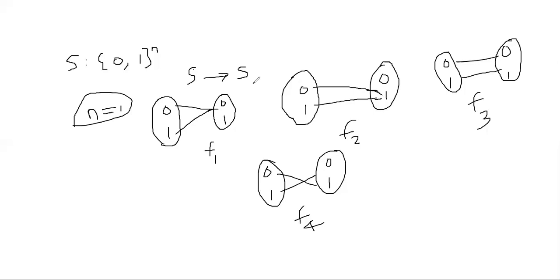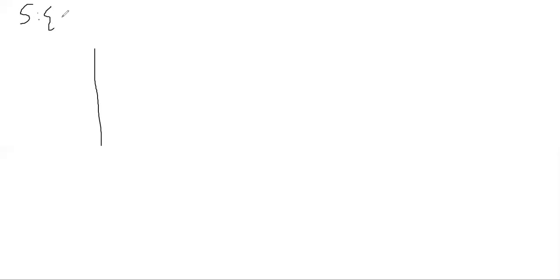The trick is to view one function as a table — a lookup table. My set S is made of binary strings {0,1}^n, meaning binary strings of length n. The possible values we can write with n digits range from 0 all the way to 2^n − 1. Those are all the possible values for an n-bit number.